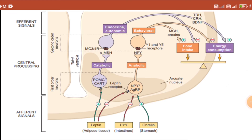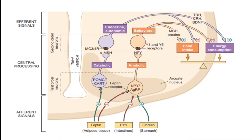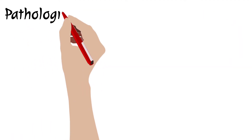The entire process of catabolic and anabolic signaling is regulated by first-order and second-order neurons in the arcuate nucleus of the hypothalamus. The hypothalamus is therefore the master regulator of energy balance and energy homeostasis. This is the basic pathogenetic mechanism — whenever this neurohumoral circuit is disturbed, obesity can occur over months or years.